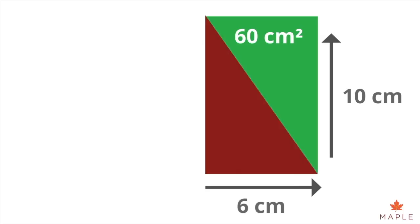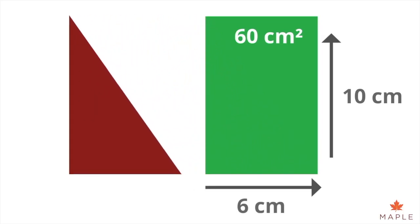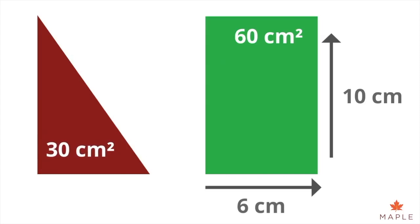Therefore, a triangle with the same width and perpendicular height would have an area of 30 centimeters squared, which is half the amount.